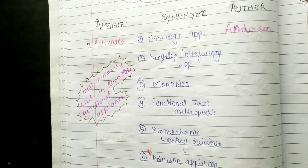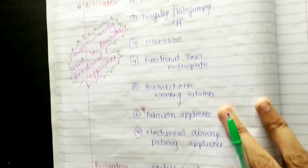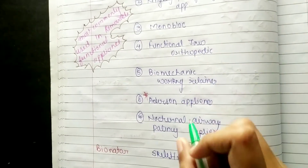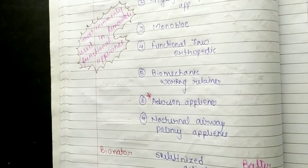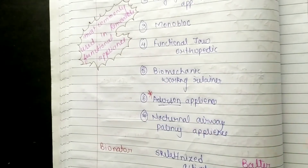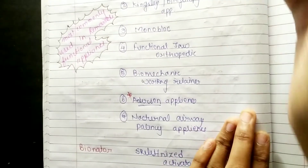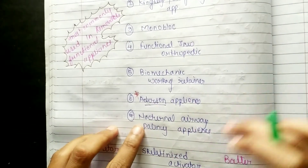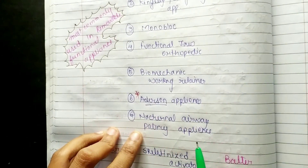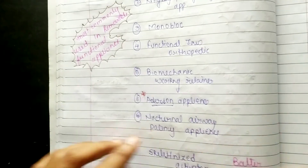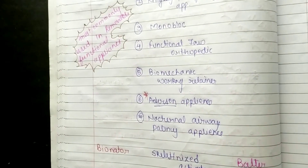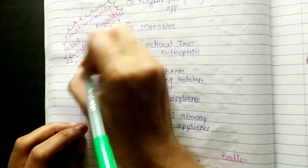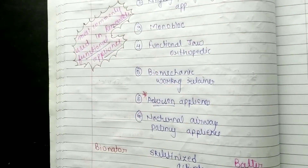Other synonyms of the Activator are: Monoblock, Functional Jaw Orthopedic, Biomechanic, Working Retainer, Anderson Appliance — named after its discoverer Anderson — and Nocturnal Airway Potency Appliance. The Activator is the most commonly used removable functional appliance.